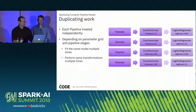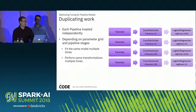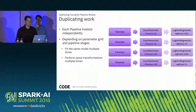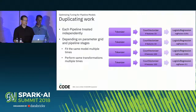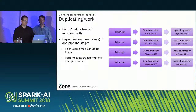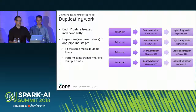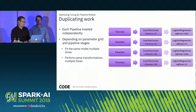Spark currently treats each pipeline completely independently, which works great for model parallelism since they can all run asynchronously. But it ends up creating a lot of extra duplicated work. Depending on how you set up your parameter grid and pipeline stages, you might end up fitting the same model more than once and doing the same transformations over and over again. In our simple example with tokenizer, count vectorizer, and logistic regression, with two parameters from each of count vectorizer and logistic regression giving four total pipelines, we end up repeating the tokenizer transform all four times and training each count vectorizer model twice.